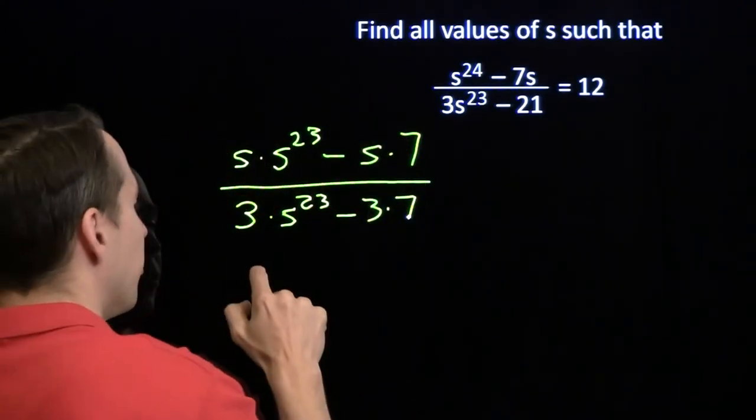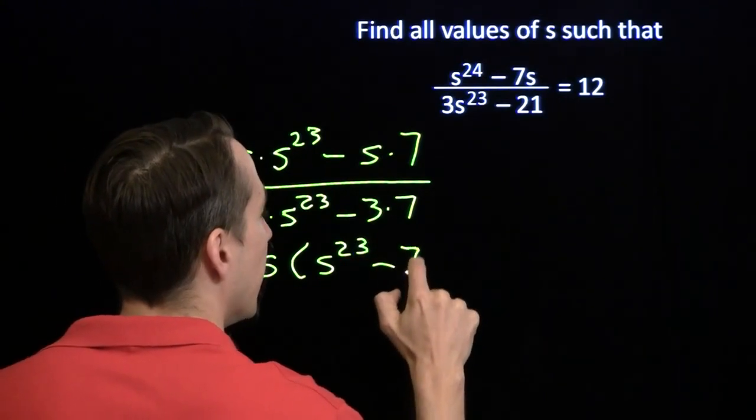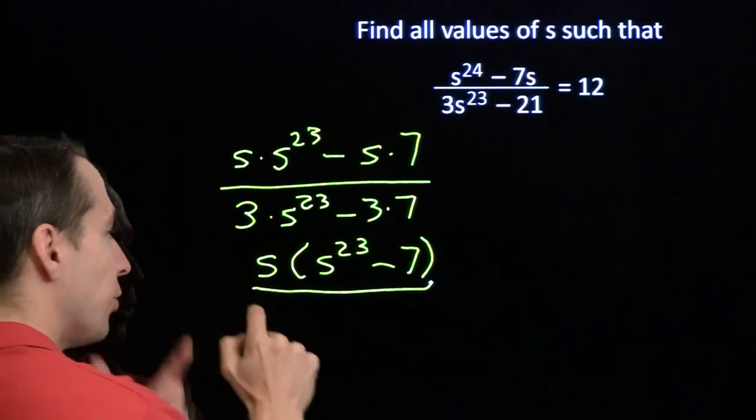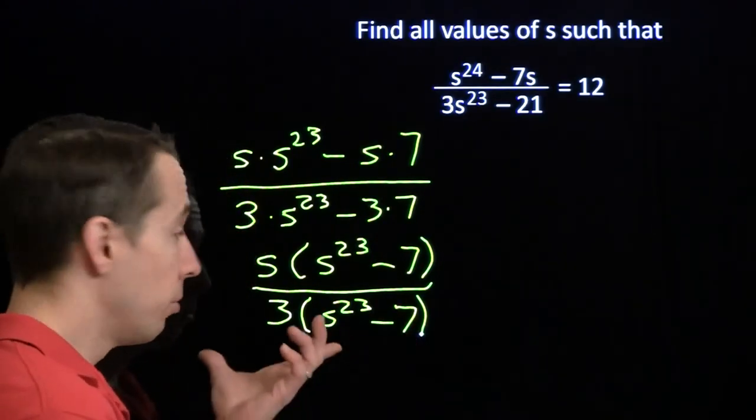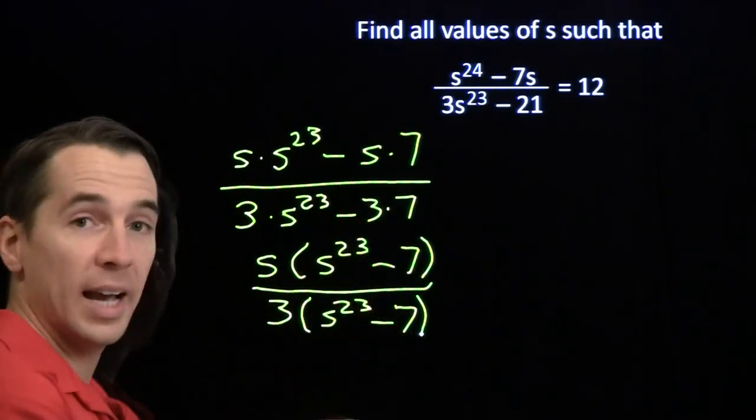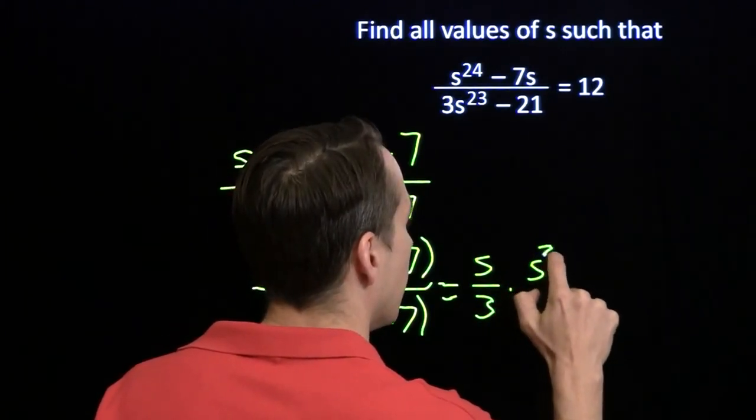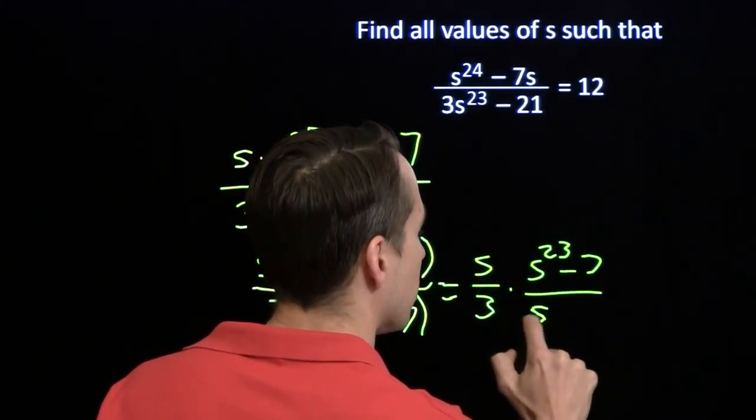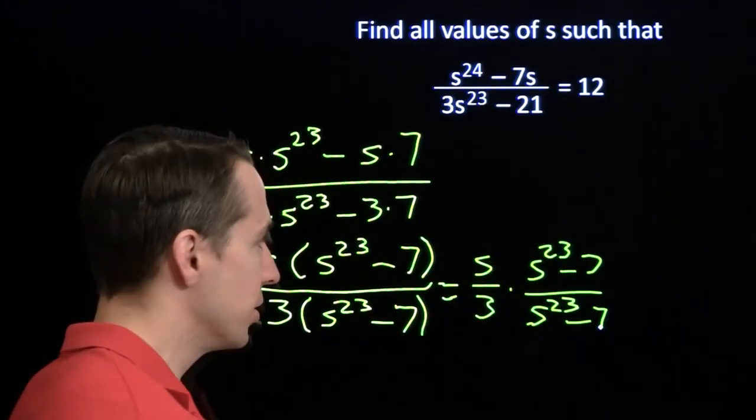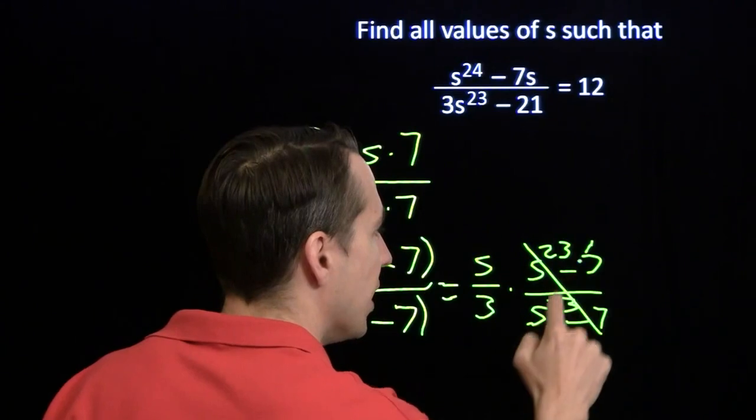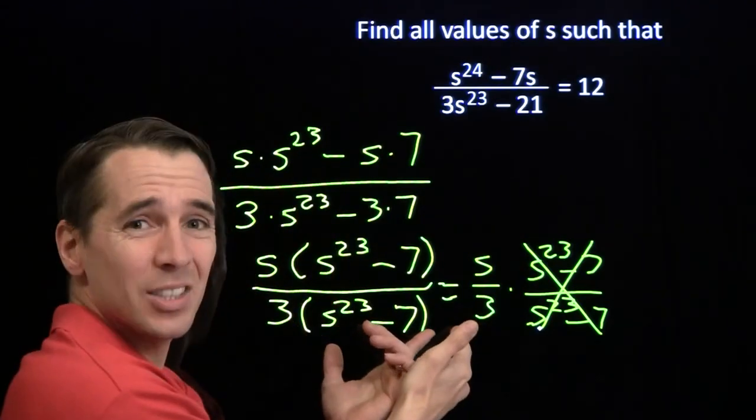Now I can factor in the numerator, I can factor out the s, and write that as s times s to the 23rd minus 7. And in the denominator, I can factor out the 3. And now, this is nice, because I've got a common factor in the numerator and the denominator. I can get rid of that. I can write this as s over 3 times s to the 23rd minus 7 over s to the 23rd minus 7. Well, this fraction is just 1. As long as s to the 23rd minus 7 isn't 0, then that factor is 1. Of course, we can't have s to the 23rd minus 7 be 0, because then we'll be dividing by 0. We can't do that. So this all simplifies to just s over 3.